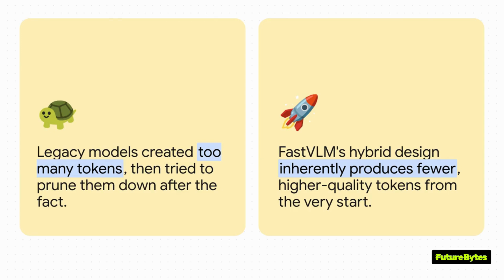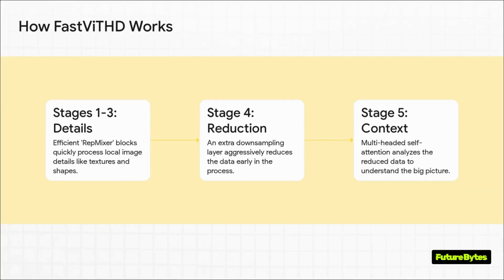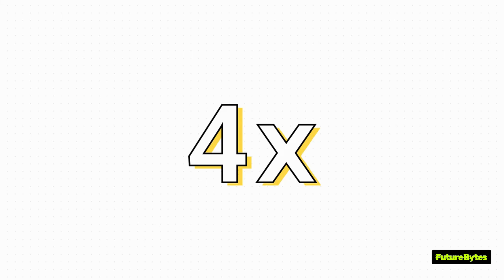The secret sauce is a new hybrid vision encoder they built called FastViTHD, designed from the ground up to tackle the token problem right at the source. The old methods created way too many tokens and then tried to cut them down later. FastVLM's hybrid approach blends fast, efficient engines for grabbing local details with really powerful ones that understand the bigger picture — the best of both worlds. Most models use four stages to process an image; Apple added a crucial fifth stage with a really aggressive data reduction step right near the beginning. It means the smartest, most context-aware part of the AI gets to work on data that has already been intelligently shrunk by a factor of 32. The result: four times fewer visual tokens for the language model to deal with, while preserving all the fine details the AI needs to give you an accurate answer. It's like having fewer puzzle pieces, but each piece is way smarter.